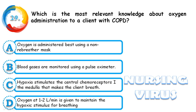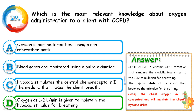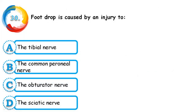Question 29: Which is the most relevant knowledge about oxygen administration to a client with COPD? Options are: oxygen is administered best using a non-rebreather mask; blood gases are monitored using a pulse oximeter; hypoxia stimulates the central chemoreceptor in the medulla making the client breathe; or oxygen at 1 to 2 liters per minute is given to maintain the hypoxic stimulus for breathing. The correct answer is D — oxygen is given at 1 to 2 liters per minute to maintain the hypoxic stimulus for breathing, as COPD patients require prolonged oxygen supply.